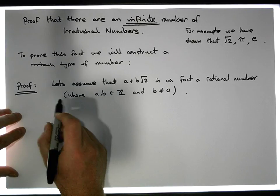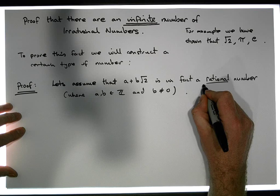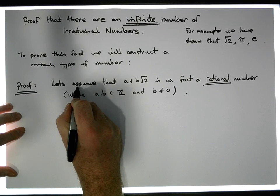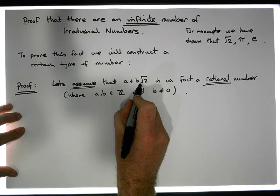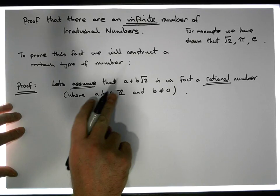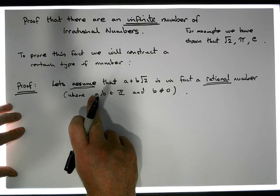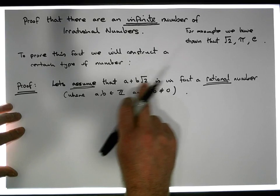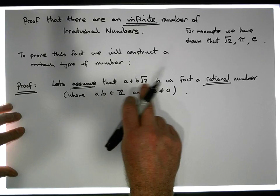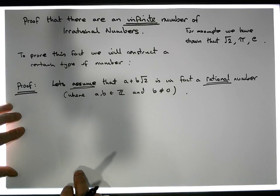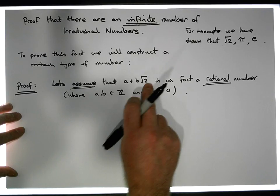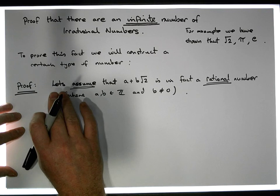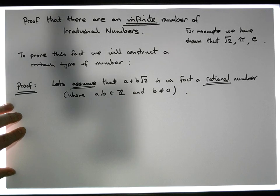So if we're going to assume that a plus b root 2 is in fact a rational number, you can actually see that we have an infinite number of choices for our a's and b's. So there's an infinite number of numbers of this particular form, where a's and b's are integer values. There's an infinite number of these numbers, and b cannot be equal to 0.